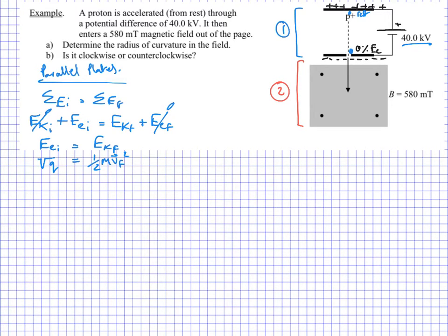So this is going to give us the velocity. We can rewrite this as 2VQ over the mass square rooted. And so that gives us, if we write all this in, we're going to have 2 times 40 kilovolts there, times the charge of a proton, which is 1.6 times 10 to the negative 19 coulombs, over the mass of a proton, which is 1.67 times 10 to the negative 27 kilograms. And this whole thing is square rooted. And that's going to give us a velocity of 2.768 times 10 to the 6 meters per second.